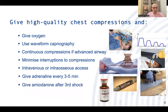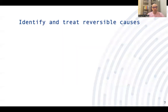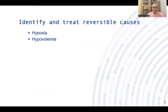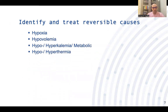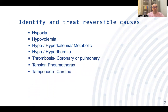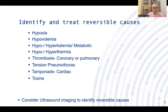Give amiodarone in shockable rhythm after the third shock. Always identify and treat reversible causes — the 4Hs and 4Ts: hypoxia, hypovolemia, hypo- and hyperkalemia and metabolic imbalance, hypothermia and hyperthermia; and thrombosis (myocardial infarction or pulmonary embolism), tension pneumothorax, cardiac tamponade, and toxins. These are all reversible causes of cardiac arrest. We will discuss how to identify and treat them in a separate presentation.